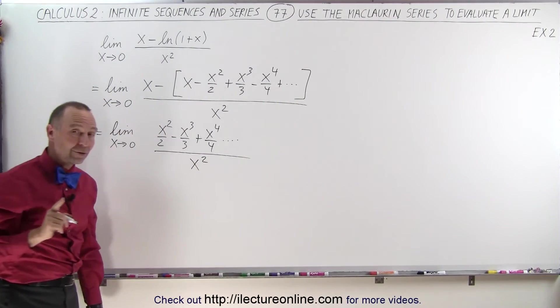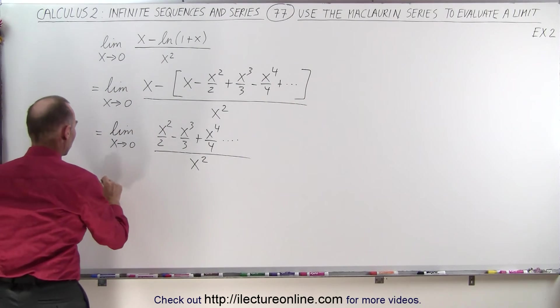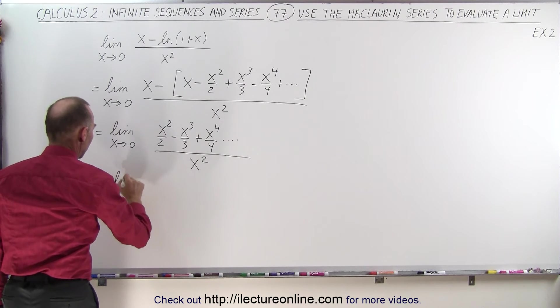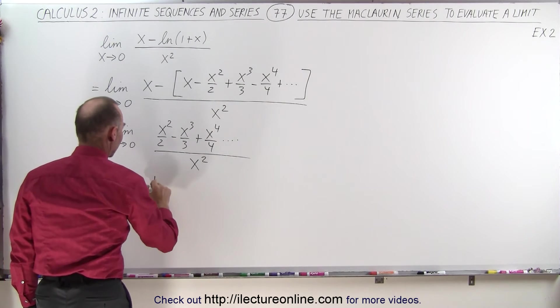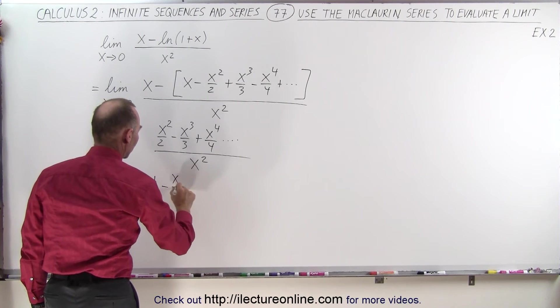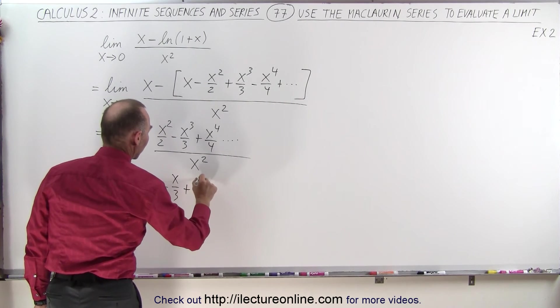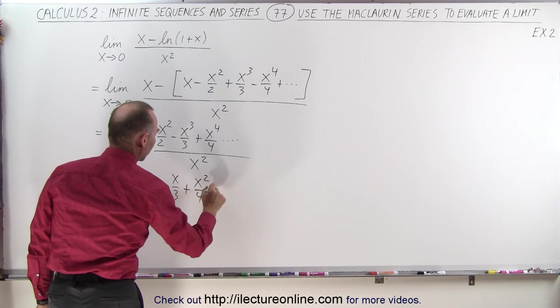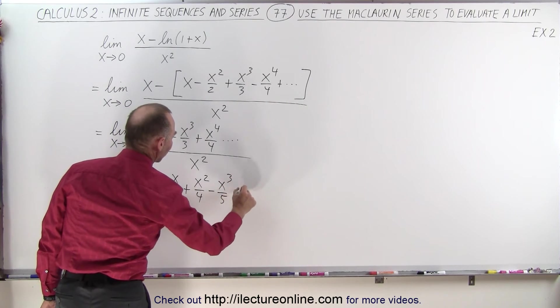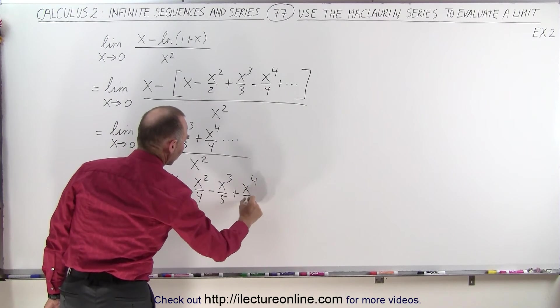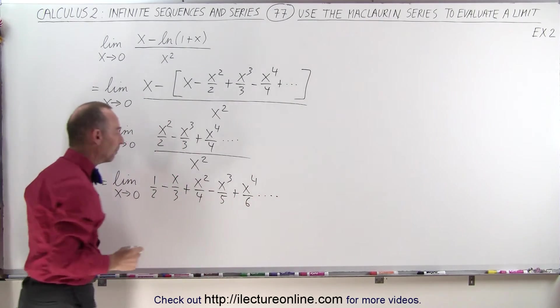And now we're ready to divide the denominator into the numerator, so this becomes equal to the limit as x approaches 0 of 1 half minus x over 3 plus x squared over 4 minus x cubed over 5 plus x to the 4th over 6, and I think you see how the pattern continues.